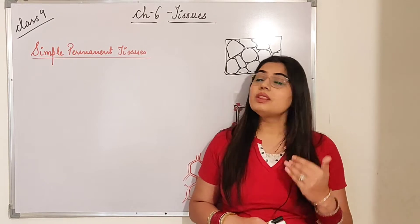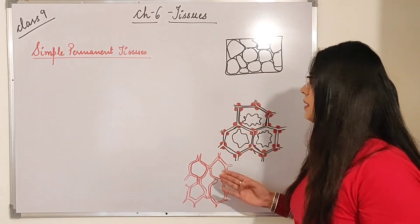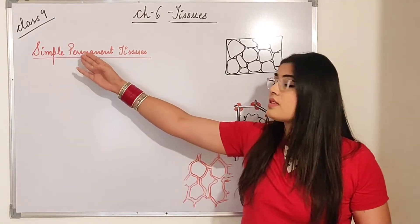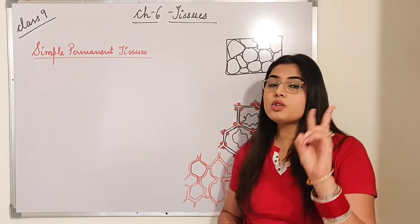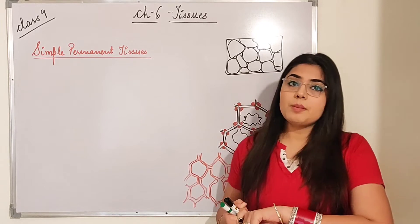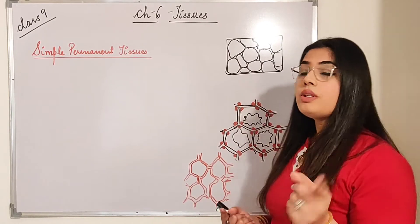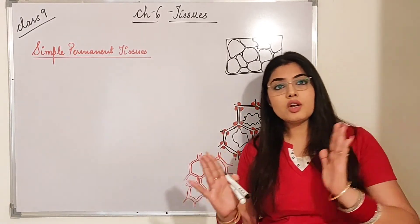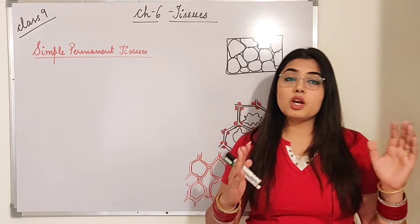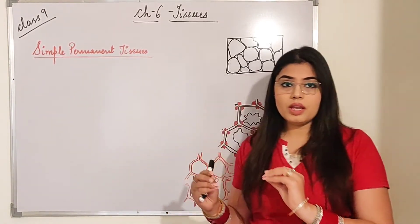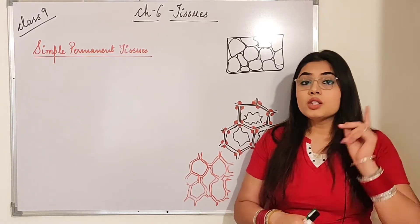Now in this part of the video we will be moving on with simple permanent tissue. I have drawn diagrams here showing the parts or types of different simple permanent tissues. To recap: there are two types of plant cells — meristematic tissue and permanent tissue. Permanent tissue is also of two types: simple permanent tissues and complex permanent tissues. Simple permanent tissues are made up of the same type of cells, while complex permanent tissues are made up of different types of cells.